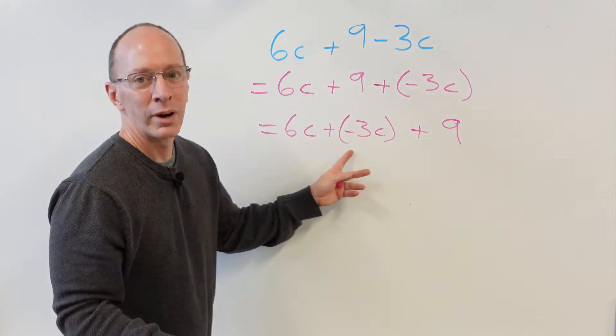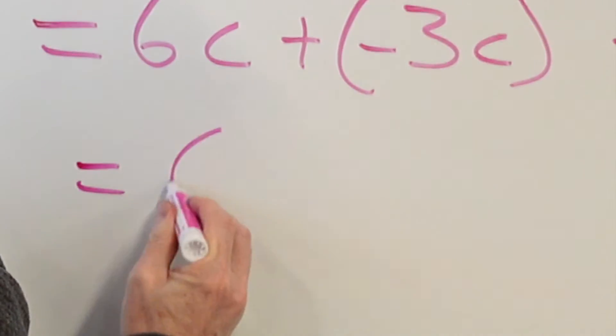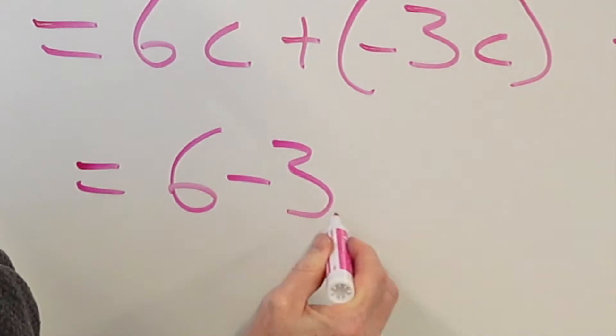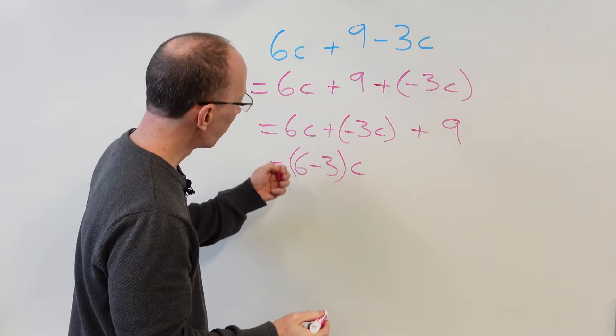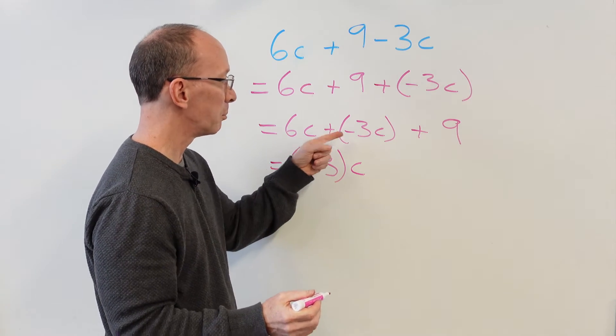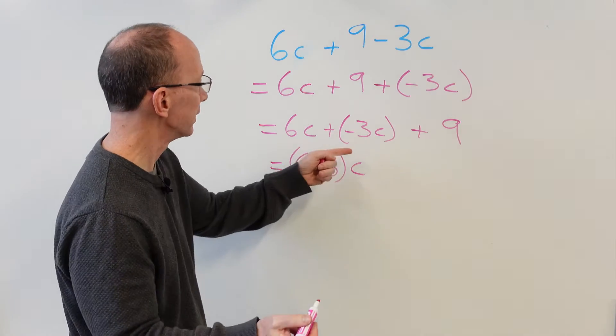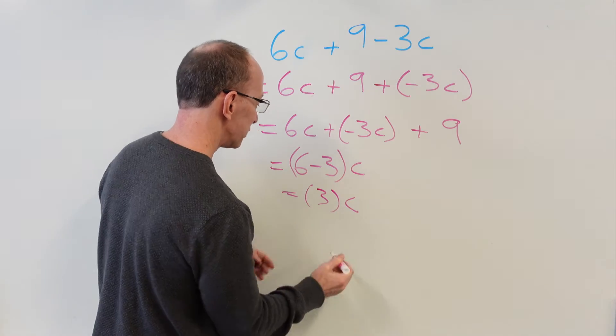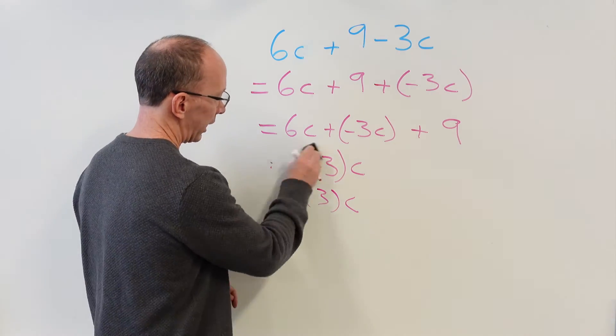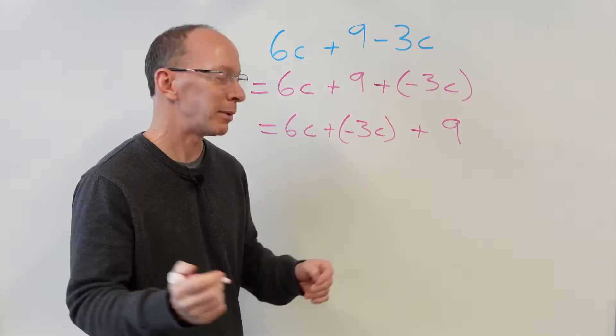Now there's different ways on how you can go about doing that. You could take 6 minus 3 and then put the c right there. Or you could just say 6c minus 3c. It's going to be 3c. Same thing right here. So you got the 3 and then you got the c. However you want to do it, it doesn't matter as long as you come up with the same answer.